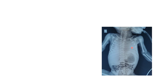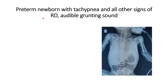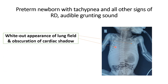Now look at this x-ray. This x-ray is of a preterm newborn who was having all the signs and symptoms of respiratory distress. In this x-ray, when you see the lung field, it is completely white out. You are not able to differentiate where the left and right heart border are. The terminology we use for this type of x-ray is white-out appearance of the lung field and obscuration of the cardiac shadow. Another terminology used whenever there is obscuration of the cardiac border — when you are not able to differentiate the impression of the aorta, pulmonary artery, right atrium, and left ventricle — is the silhouette sign.